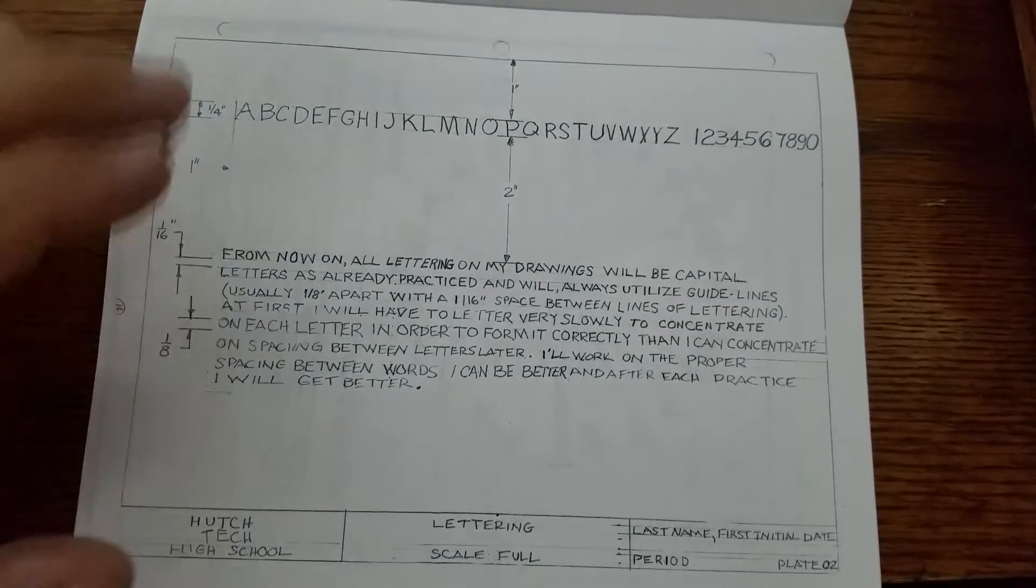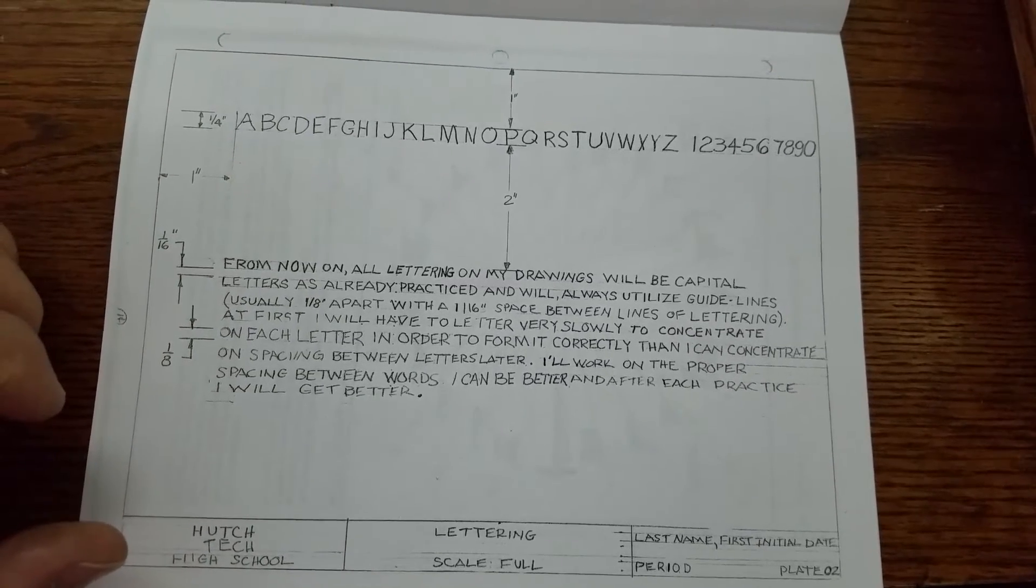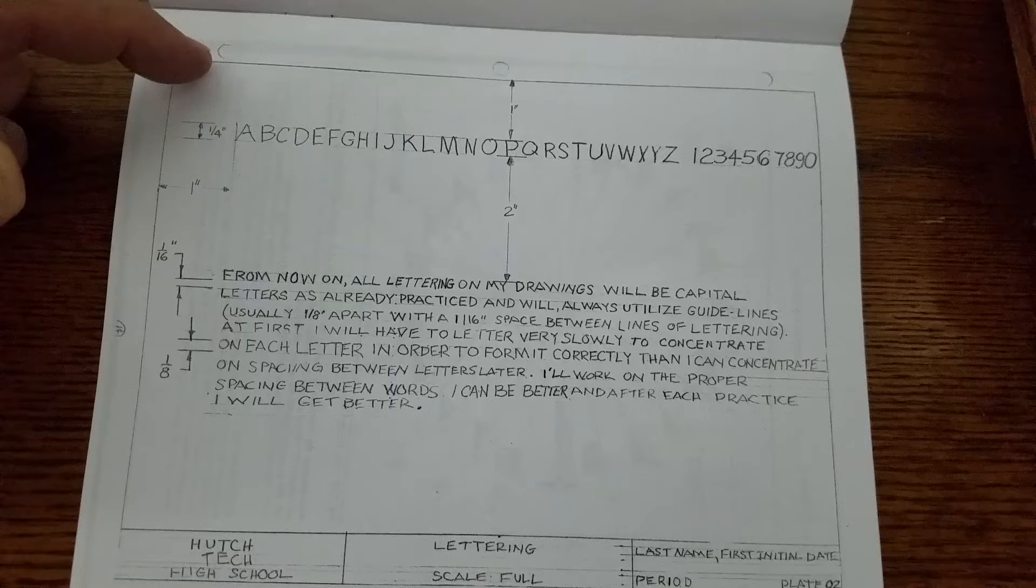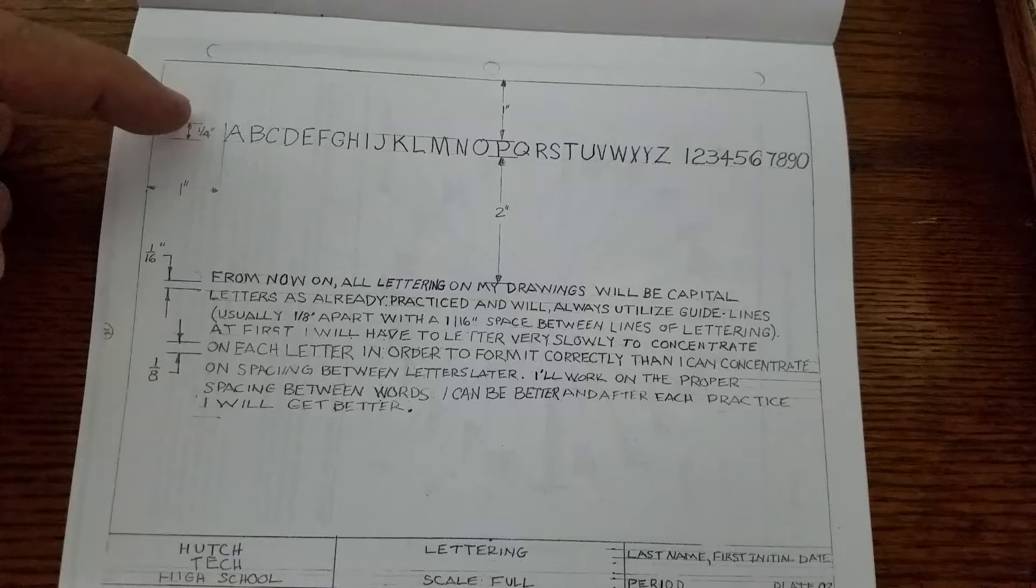After you've completed this title block part just like you would on plate 1, the next thing that you're gonna do is from this top border line, this half an inch in, you're gonna measure one inch down.